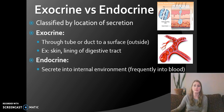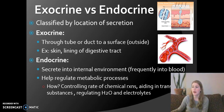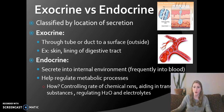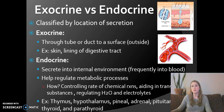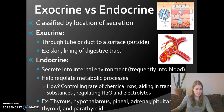The endocrine system gets secreted into the internal environment, and that is frequently blood. It helps regulate a lot of metabolic processes — aiding in moving amino acids into cells so they can build more proteins, speeding up gluconeogenesis (the formation of glucose) to raise blood sugar, and regulating how much water and electrolytes you have in your body. This is all done by the thymus, hypothalamus, pineal, adrenal, pituitary, thyroid, and parathyroid glands — everything we've been looking at. Exocrine, we saw a lot in the integumentary chapter.